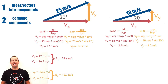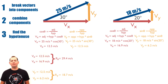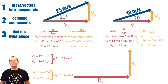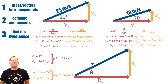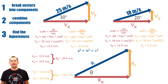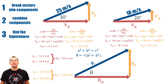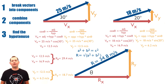These two components can now be recombined to determine our resultant vector. These two separate vectors represent the sides of a right triangle, and the resultant vector would be our hypotenuse. The magnitude of our resultant vector can be determined using the Pythagorean theorem: a squared plus b squared equals c squared, where a and b are our x component and y component. The hypotenuse is equal to the square root of the sum of the squares of the two sides.